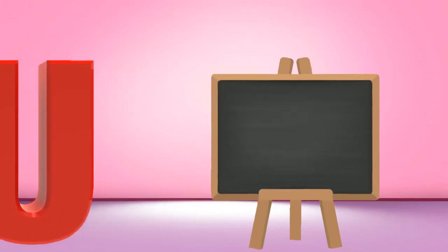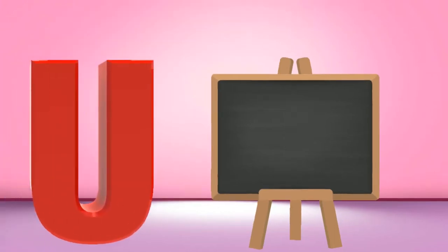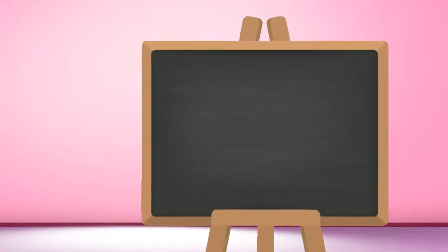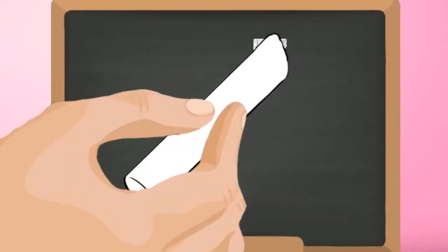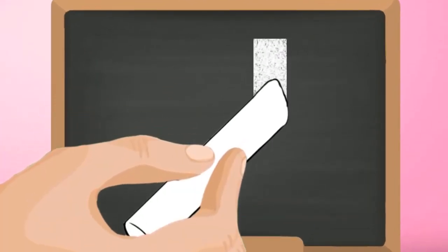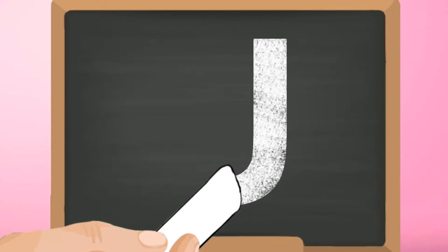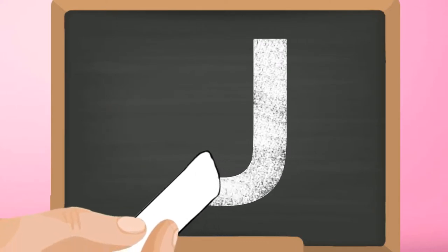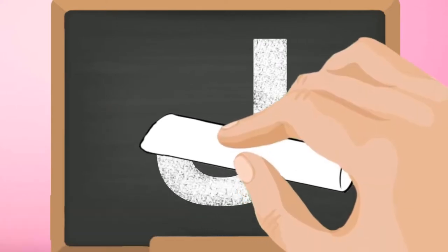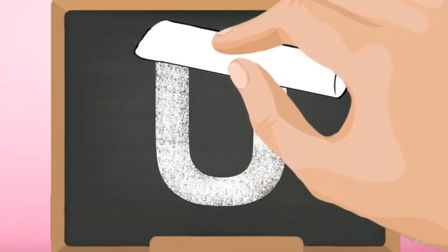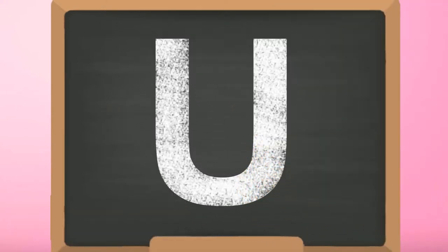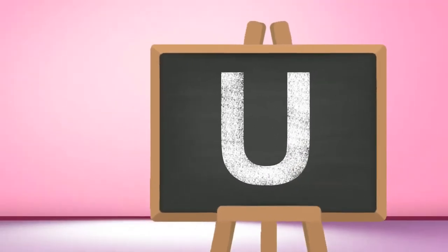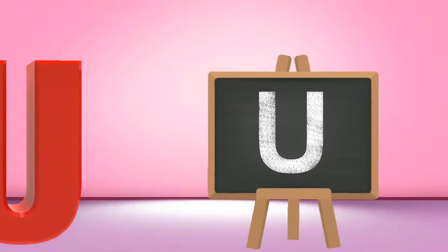U, capital U. Start from the top and draw a standing line down. Then curve towards the right and keep going up to reach the top. Capital U.